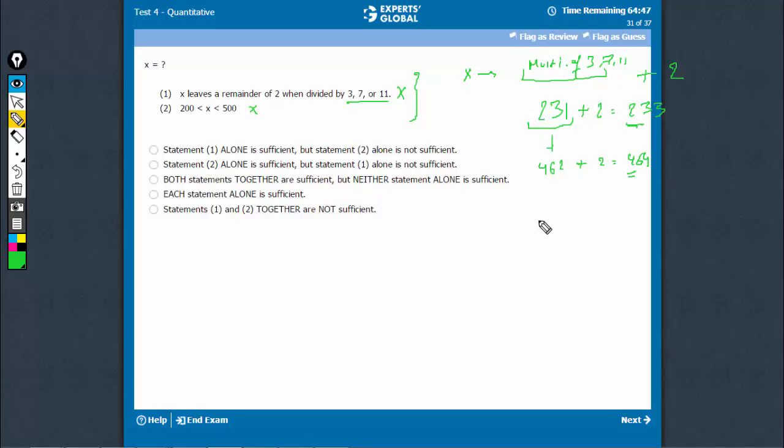231, the third multiple, 693 plus 2. There will be other such cases, but between 200 and 500 as well, there are two cases and therefore, x could be 233 as well as 464. So, even on combining, we don't get a unique answer. Combining also doesn't help and therefore, E is the right answer.